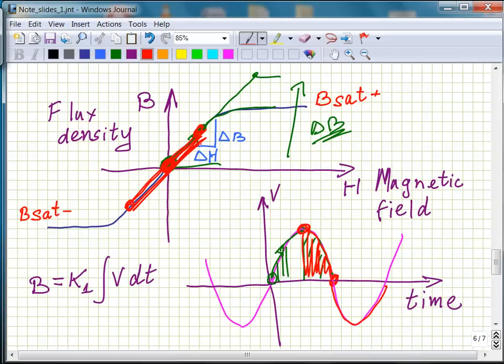So, the conclusion is that to avoid entering saturation region in a transformer or in any other inductive load, which is wound on a core, which has some BH curve and saturation regions.